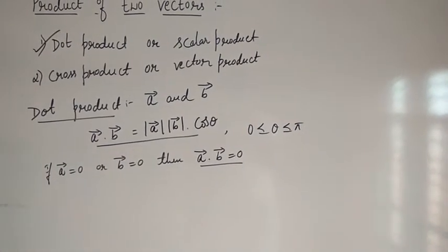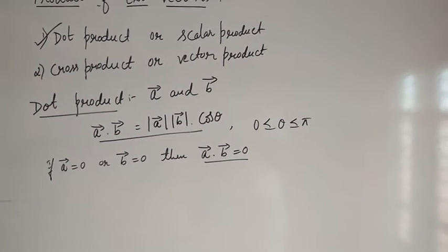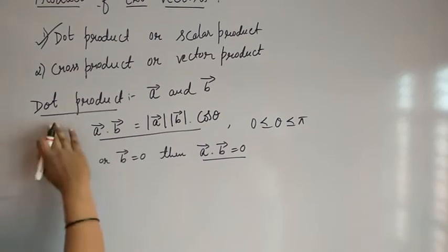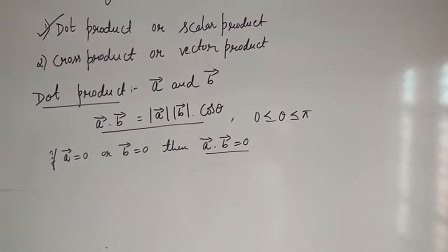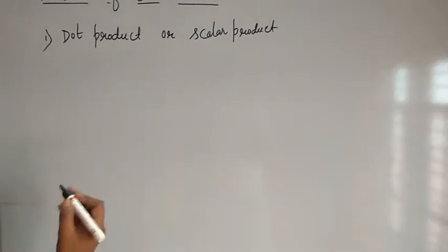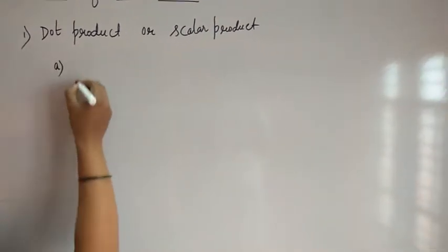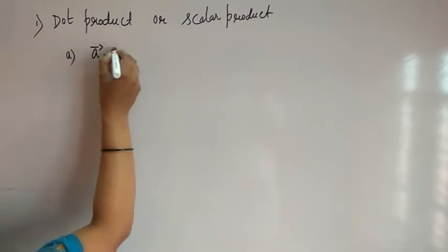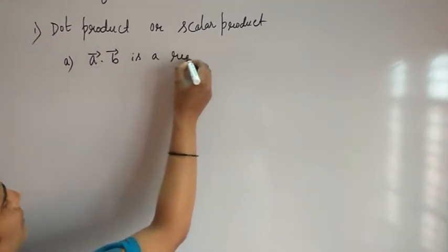In dot product, the resultant is always scalar. Since the resultant is always scalar, dot product is also called as scalar product. The first important point is: dot product is always a real number, that is vector A dot vector B is a real number.